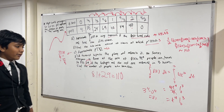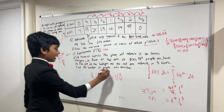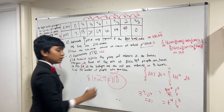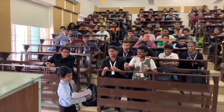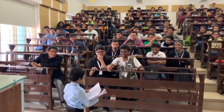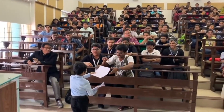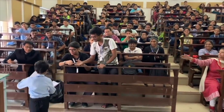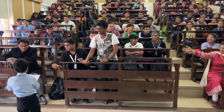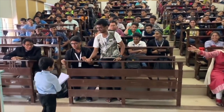Thank you everybody who's watching, and we'll see you in the next one. Soborno Isaac Bari, who is known as the god of mathematics, became the youngest professor in the history of mankind. Thank you.